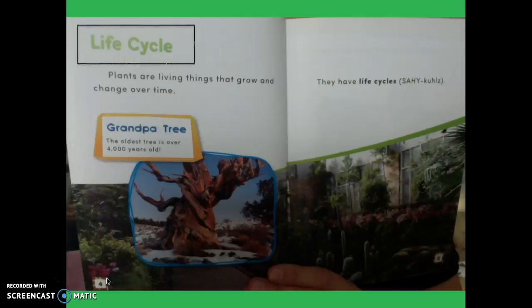Oh, boys and girls, I noticed there's a heading up at the top of this page. A heading is kind of like your title for that specific page and it tells you what that page is all about. So it's telling me the main idea of this page and it's all about the life cycle. I also noticed this little box. This is called a caption. This is a text feature that some books have to teach you what is in the picture or the photograph. This one says Grandpa Tree. The oldest tree is over 4,000 years old. And then right below that caption, we see the picture of the grandpa tree.